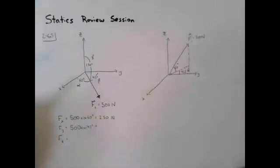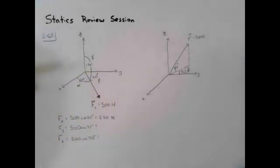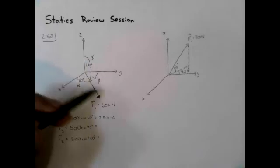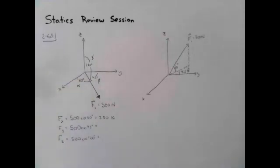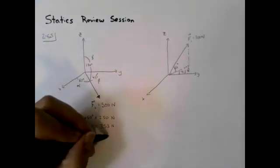And then for the z component, we calculate using the cosine of 120. Essentially what these angles are giving us are just little right triangles. A right triangle with an angle of 60, a right triangle with an angle of 45, a right triangle with an obtuse angle of 120. The values are 353 newtons for Fy and then for Fz is negative 250 newtons.